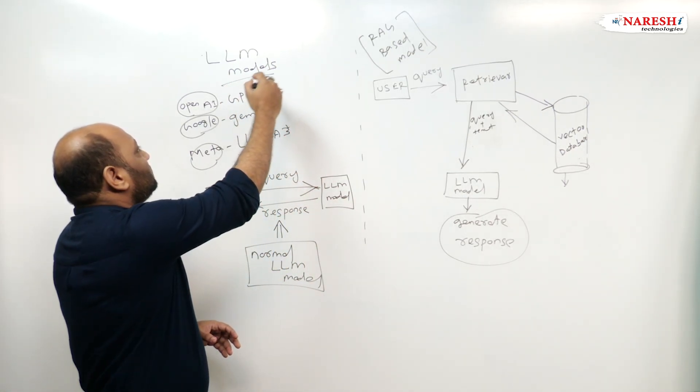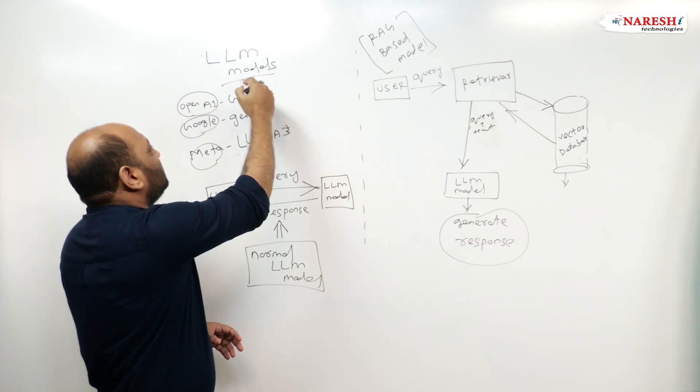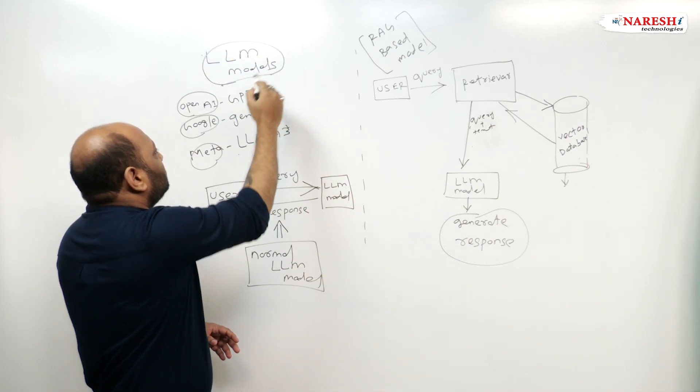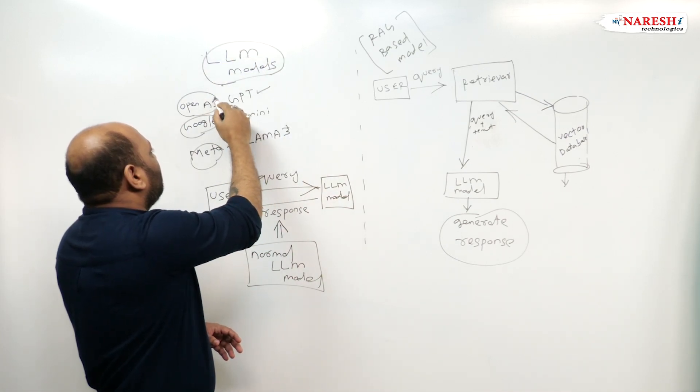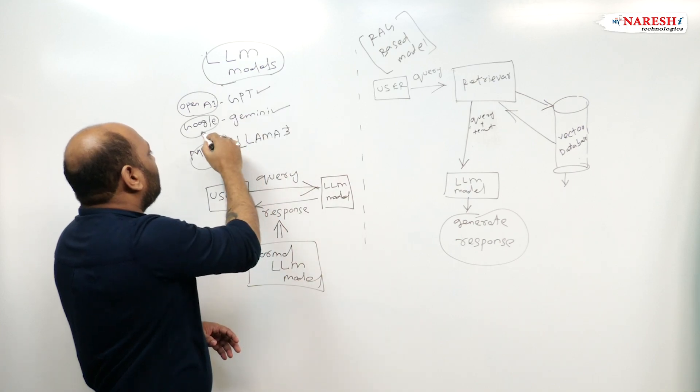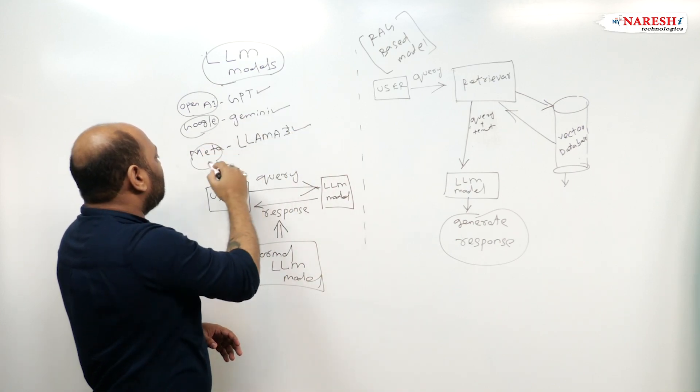First, let's understand what LLM models are. GPT from OpenAI, Gemini from Google, and Llama 3 from Meta. Everybody knows about these three main important models. This is a paid version and these are open source.